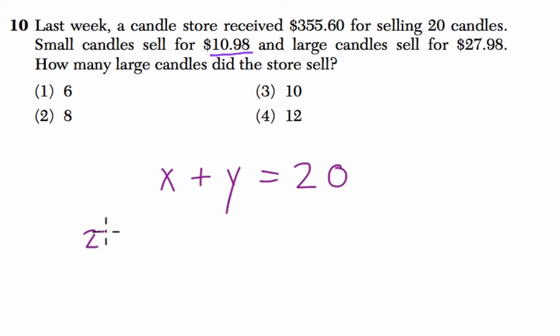The large candles are $27.98 per large candle plus $10.98 for small candles. And that total amount, when we add them together, the amount of candles we sold with the cost of each candle is $355.60. So they want us to solve for the number of large candles, which is X.